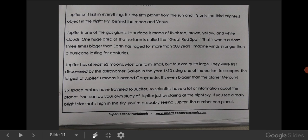Six space probes have traveled to Jupiter, so scientists have a lot of information about the planet. You can do your own study of Jupiter just by staring at the night sky. If you see a really bright star that's high in the sky, you're probably seeing Jupiter, the number one planet.